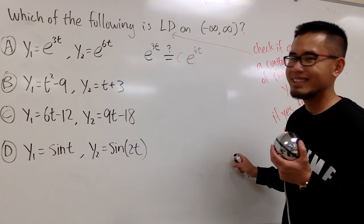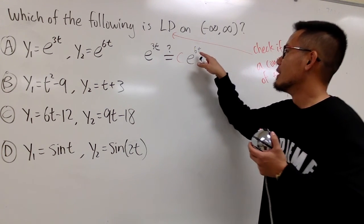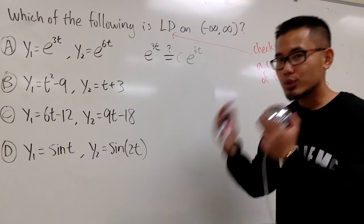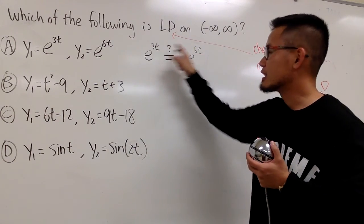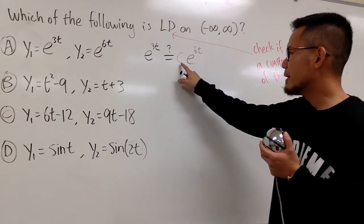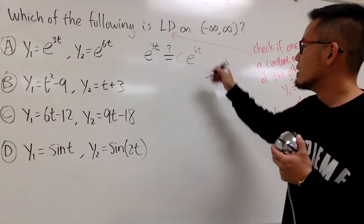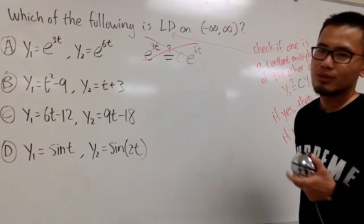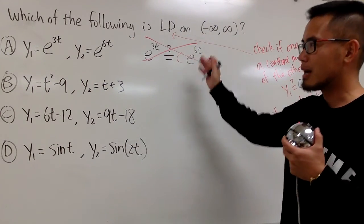Well, can this ever be true? Well, no, right? Yes, I can say 6t is 2 times 3t, but they are the exponents. I want to look at the whole function. I cannot pick a c value to make this true, right? No, not possible, not possible.